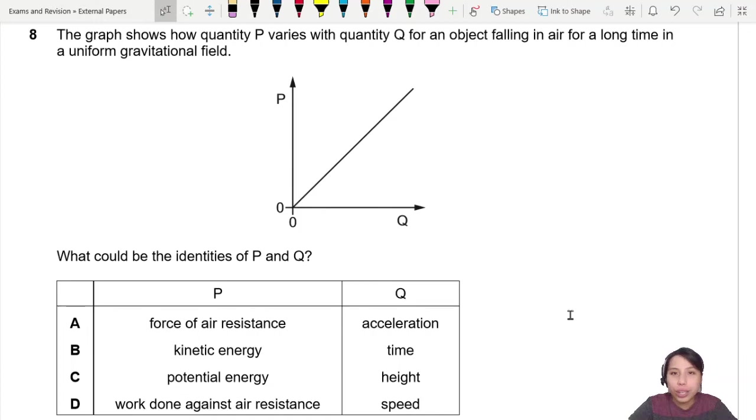Question 8. The graph shows how some mysterious quantity P varies with quantity Q for an object falling in air, kind of like free fall maybe, for a long time in a uniform gravitational field. So it's telling you that G is going to be 9.81 and a constant. What could be the identities of P and Q?